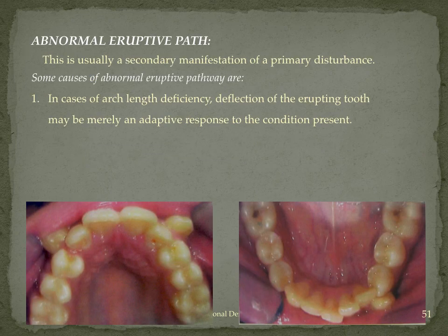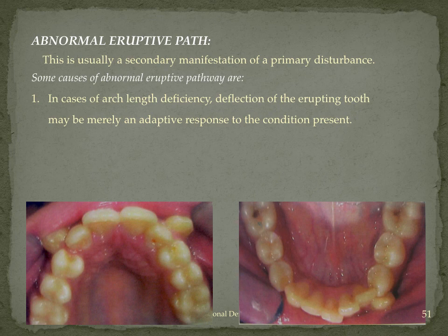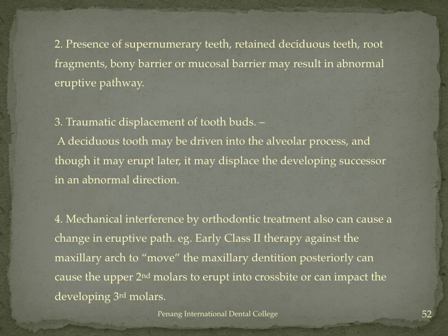An abnormal eruptive path is usually a secondary manifestation of a primary disturbance. Causes include: arch length deficiency — the maxillary canine, being the last to erupt in the maxilla, often finds no space and must adopt an abnormal path or become impacted; presence of a supernumerary tooth, retained root fragment, bony barrier, or mucosal barrier resulting in an abnormal eruptive pathway; and traumatic displacement of the erupting tooth, which may displace the developing successor in an abnormal direction.